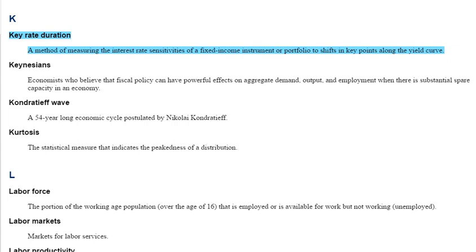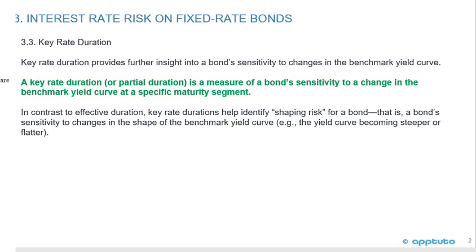It's Define Key Rate Duration, so we find that in the Glossary. Key Rate Duration: a method of measuring the interest rate sensitivities of a fixed income instrument or portfolio in shifts in key points along the yield curve. Key Rate Duration, also called Partial Duration, is a measure of a bond's sensitivity to a change in the benchmark yield curve at a specific maturity segment.